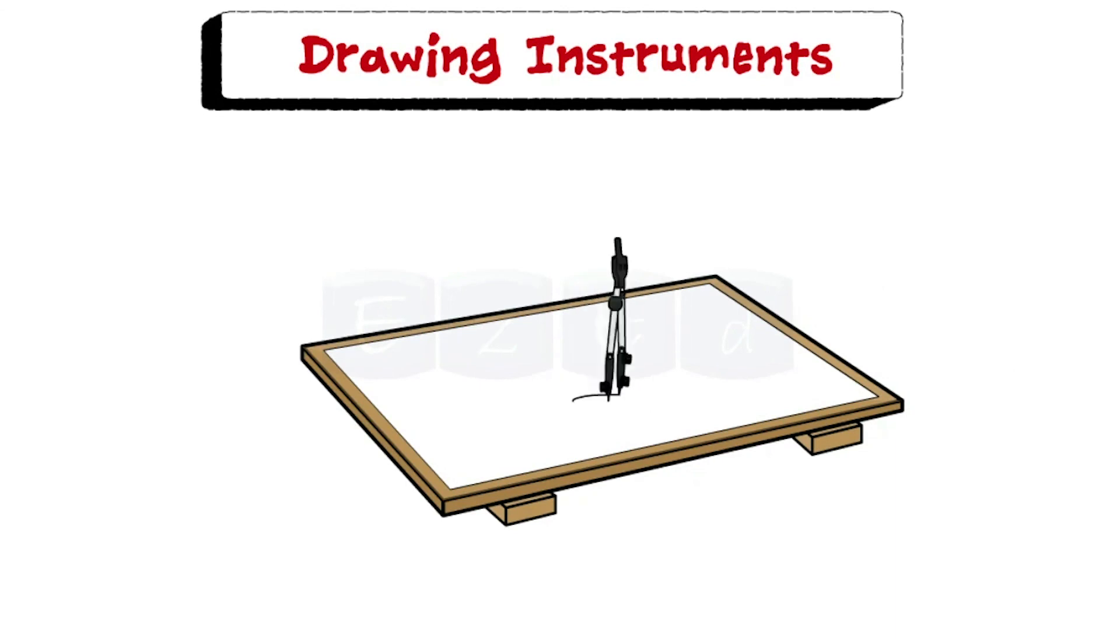A compass is used to draw a circle of a specific radius and an arc at a specific distance. Soft Indian rubber is widely used to erase pencil drawings. The eraser should be such that it does not spoil the surface of the paper.